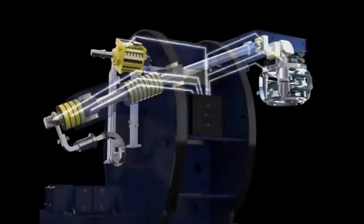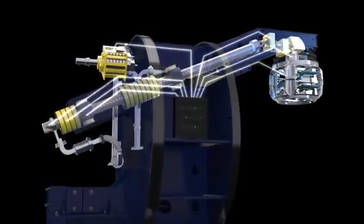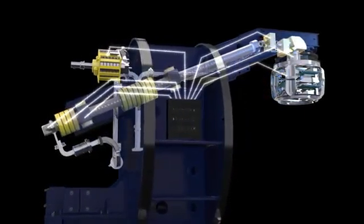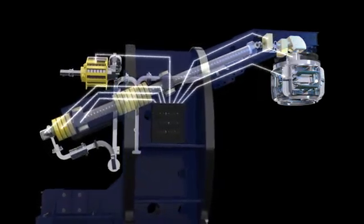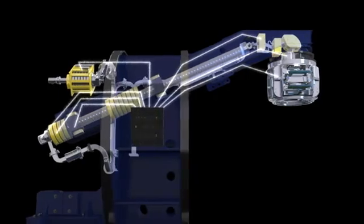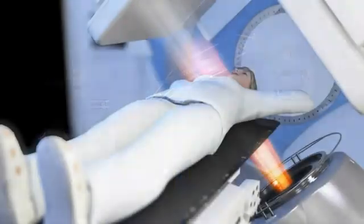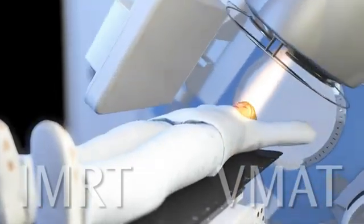LINAC control. One computer system controls both the LINAC and the multi-leaf collimator. This eliminates dosimetric errors due to communication delays. It also ensures synchronization between the delivered dose and the multi-leaf collimator position, allowing complex deliveries such as intensity modulated radiation therapy and volumetric modulated arc therapy.